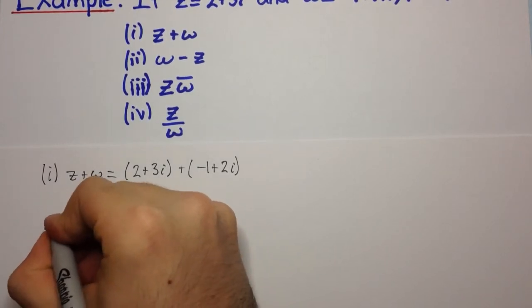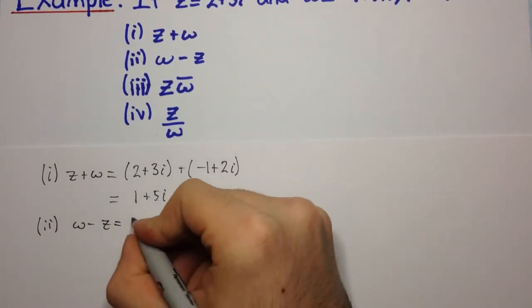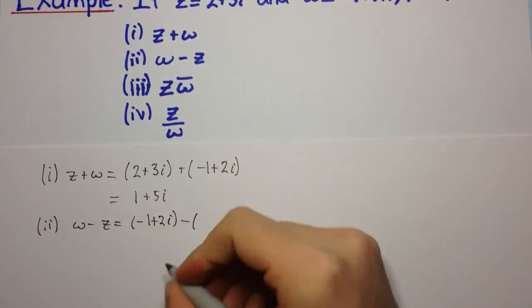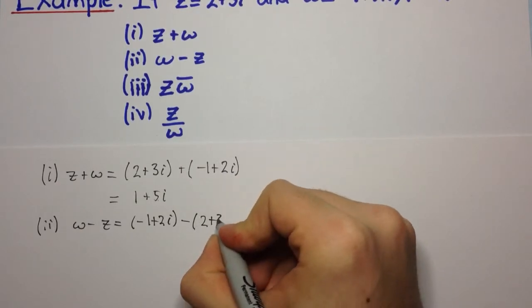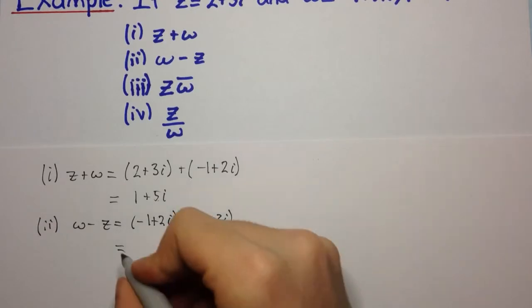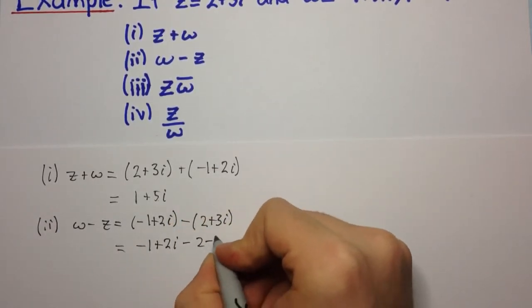Let's have a look at the next one. We have omega minus z. Omega is minus 1 plus 2i, minus z which is 2 plus 3i. We can distribute the minus through, and we get minus 1 plus 2i minus 2 minus 3i.